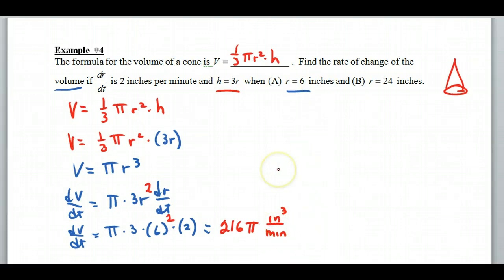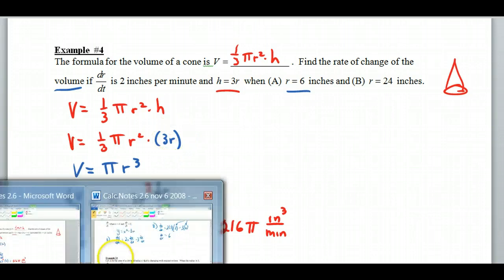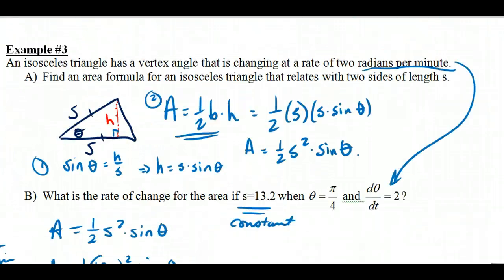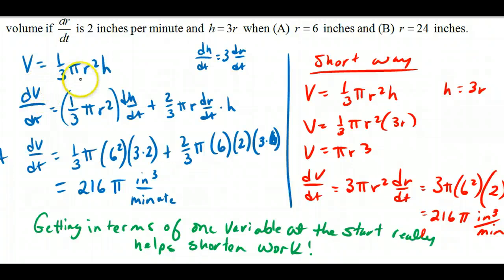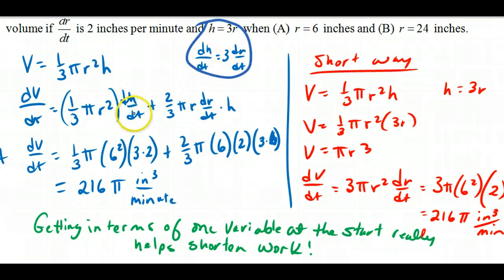I have another slide showing how to do this with the product rule without substituting in straight away, to show you how difficult it is. Using the product rule: it's first times the derivative of the second plus the second times the derivative of the first. Looking at the related equation, you also get dh/dt involved — much more complex. You plug in all the things you know and you get the same answer. So it's just a lot cleaner if you can find a relationship to get things in terms of one variable.